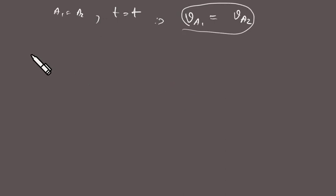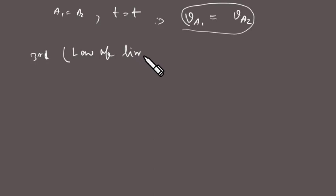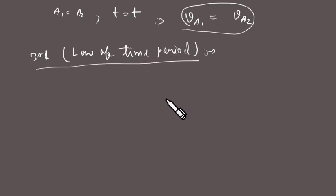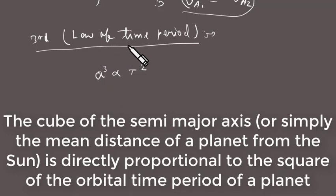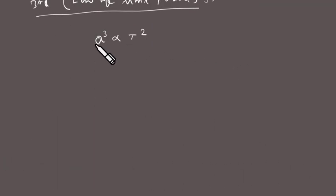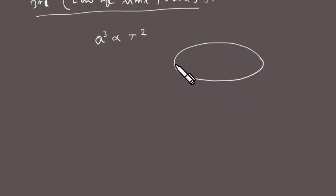Now let's move on to the third law, which is also called the Law of Time Period. It states that the cube of the semi-major axis of the ellipse is proportional to the square of the time period of revolution of the planet — that is, a³ ∝ T².